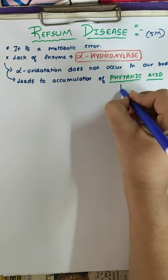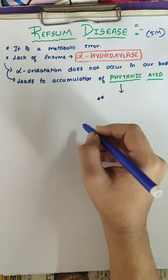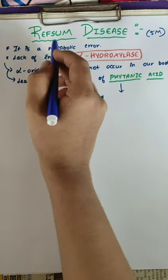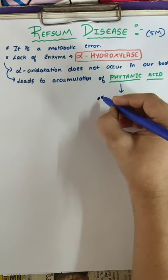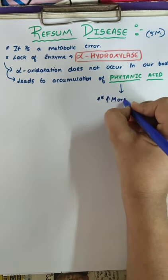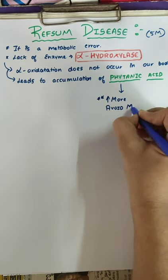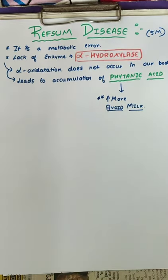Phytanic acid is found more in milk and milk products. So those who have Refsum disease should avoid milk. Remember this point — it is more in milk, so avoid milk.